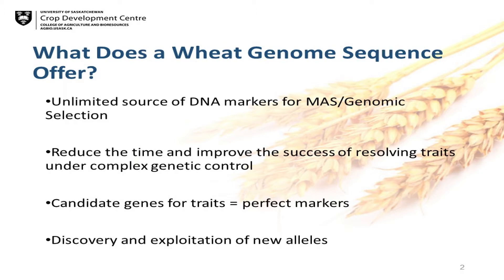A genome sequence is an unlimited source of DNA markers. It can reduce the time and improve the success of QTL mapping and understanding traits that are under complex genetic control. Most breeders I talk to feel that candidate genes for traits — perfect markers — would be ultimately where we'd like to be, along with discovery and exploitation of new alleles, particularly in wild germplasm that we'd like to introgress into our breeding program to improve allele diversity.